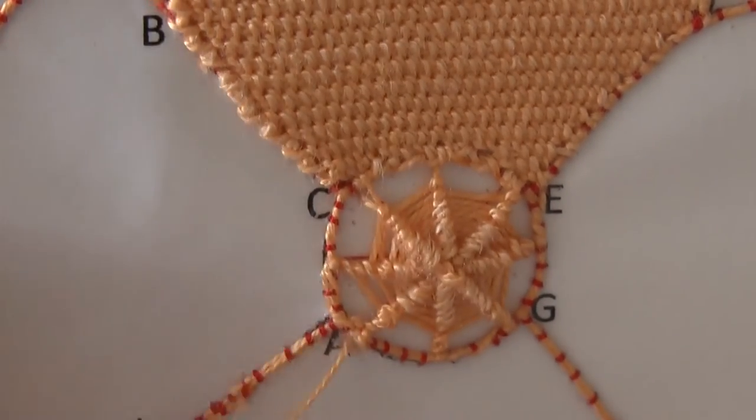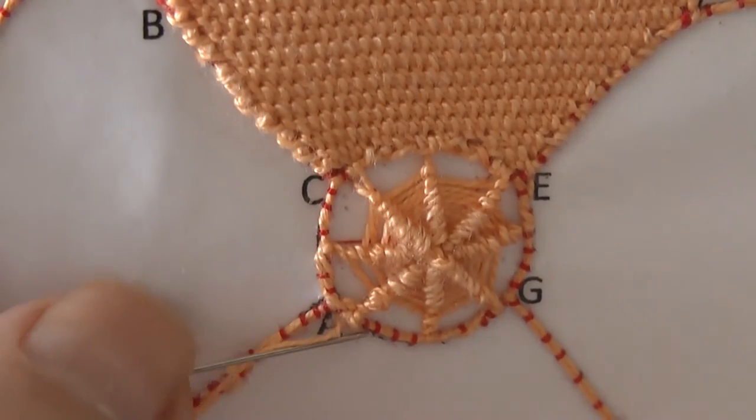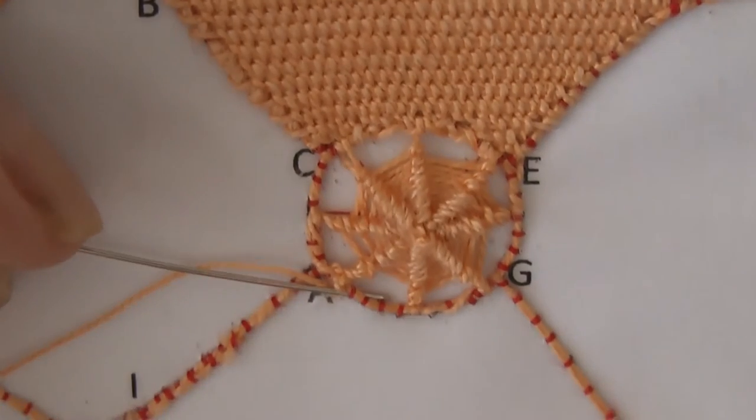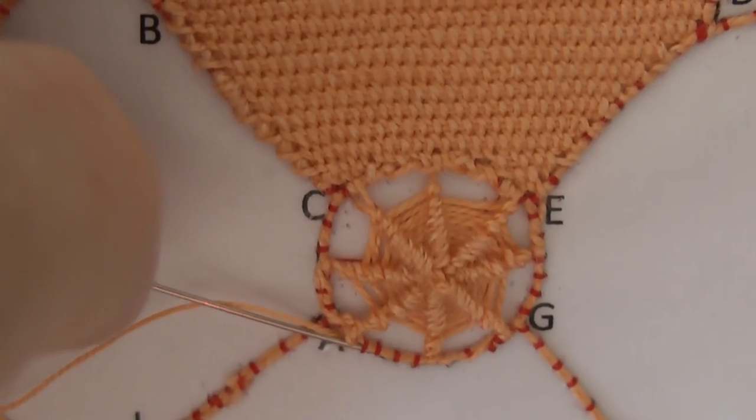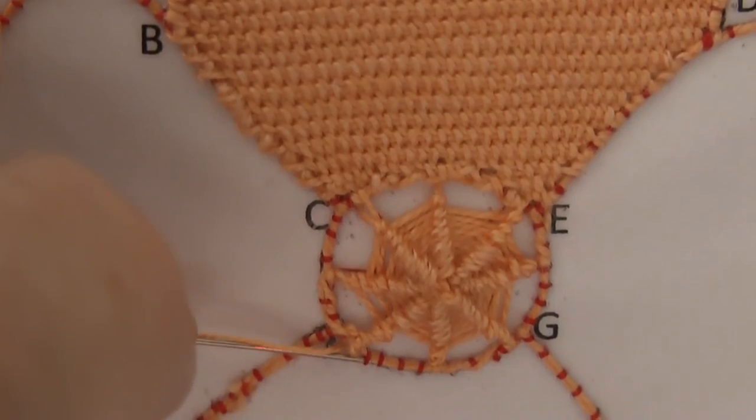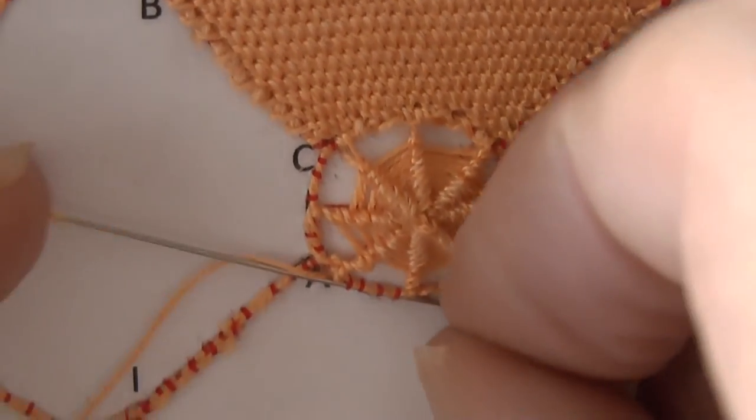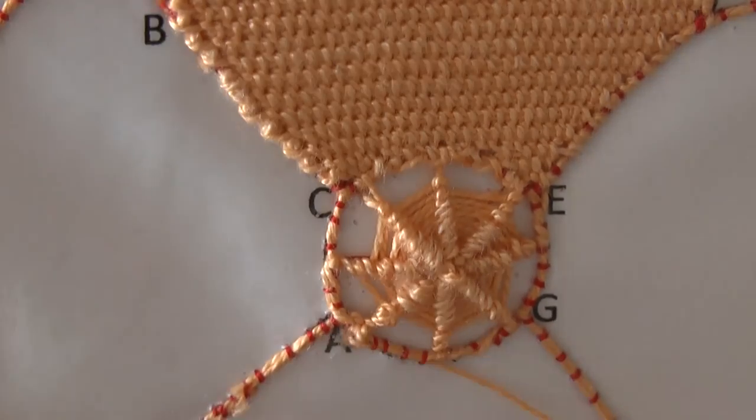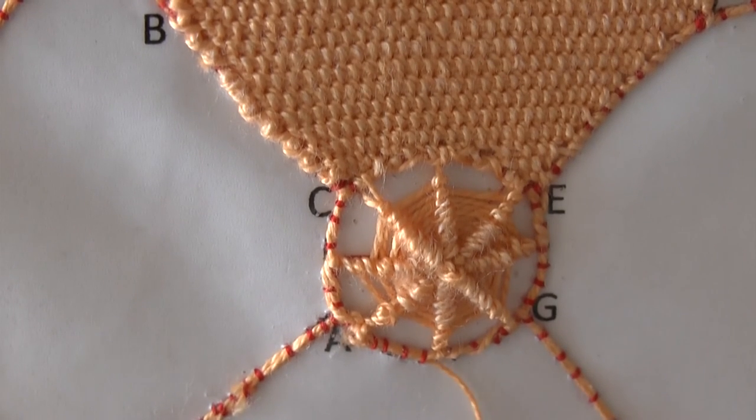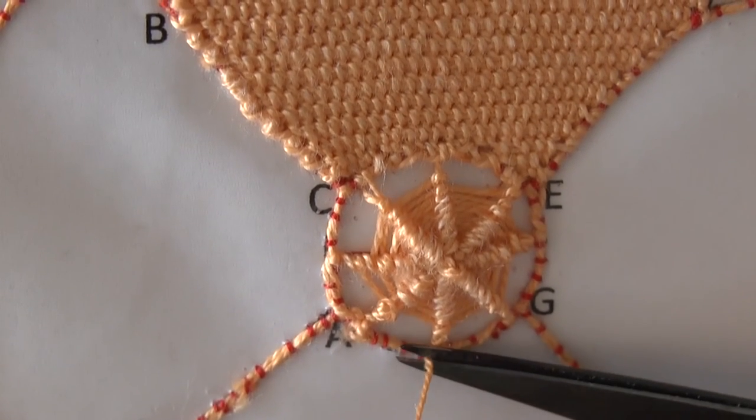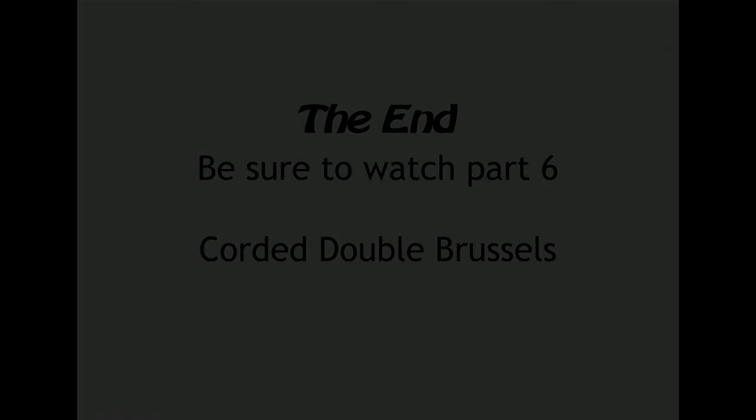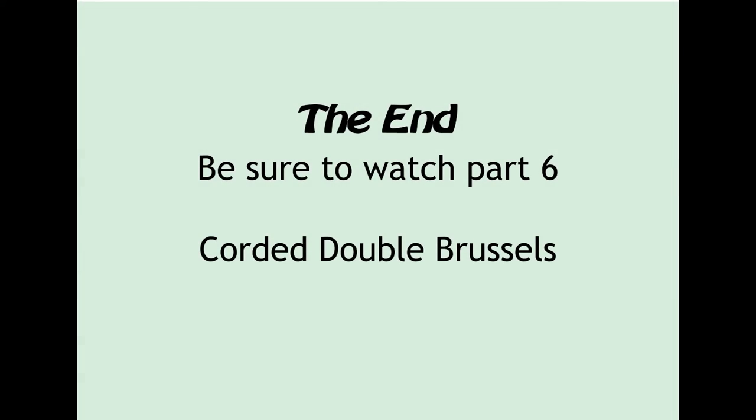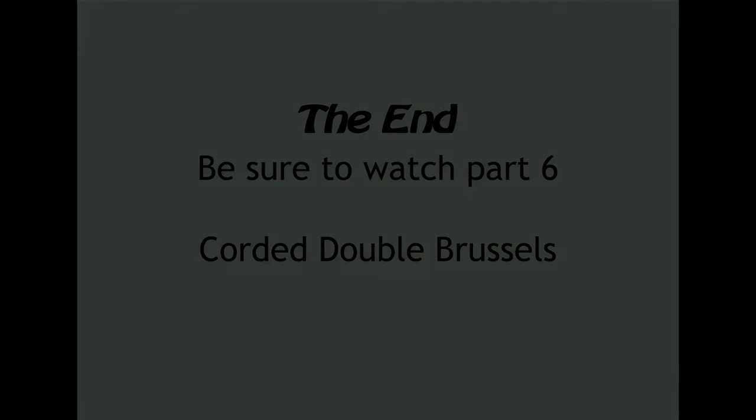Then run it off through a few couching stitches underneath here and cut off the surplus thread. So it's easier to start.